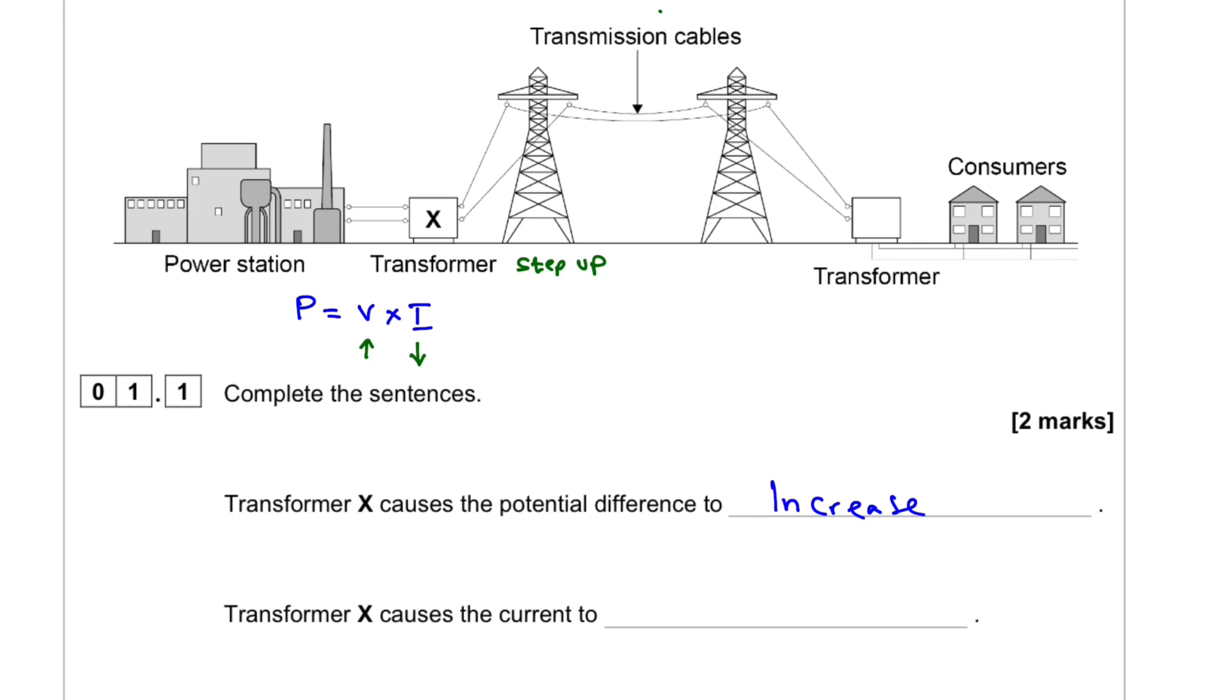And the next question is here, the transformer causes a current to... Well, if the potential difference increases, that one, this is the power, the current will decrease for the same amount of power. So therefore we will write decrease.